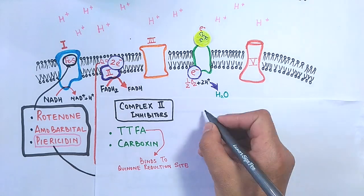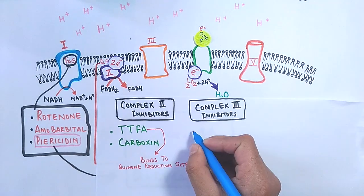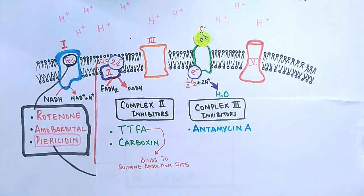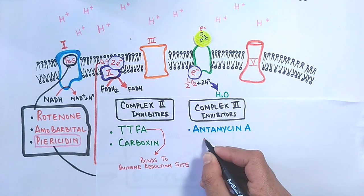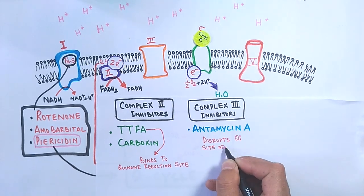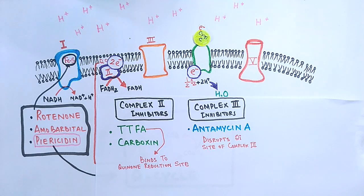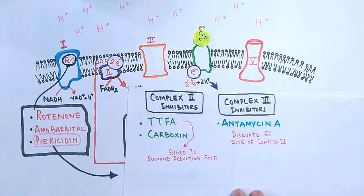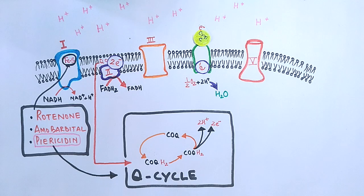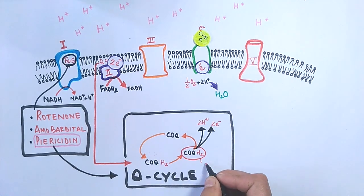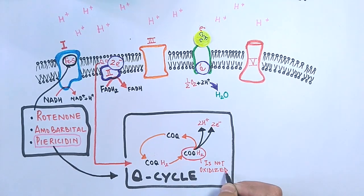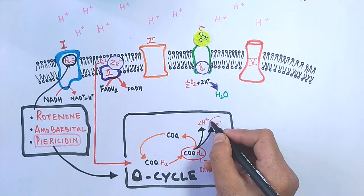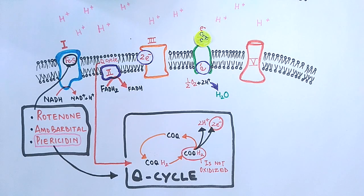Then we have complex 3 inhibitors, which is antimycin A. This compound has the ability to bind to the Qi site of complex 3 and disrupts the flow of electrons from complex 3. Actually, when we look at the Q cycle, we see this ubiquinol, that's the CoQH2, is not getting oxidized. When this is not getting oxidized, that means the two electrons from it will not be released further into the electron transport chain. So this is how the ETC is getting halted at complex 3.